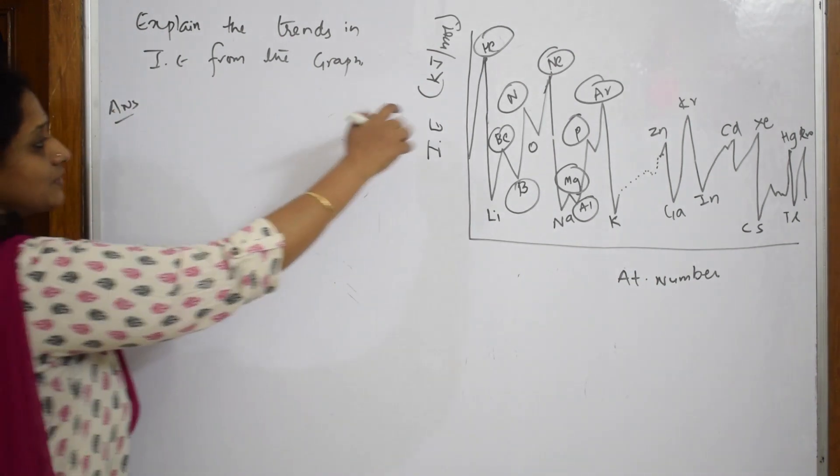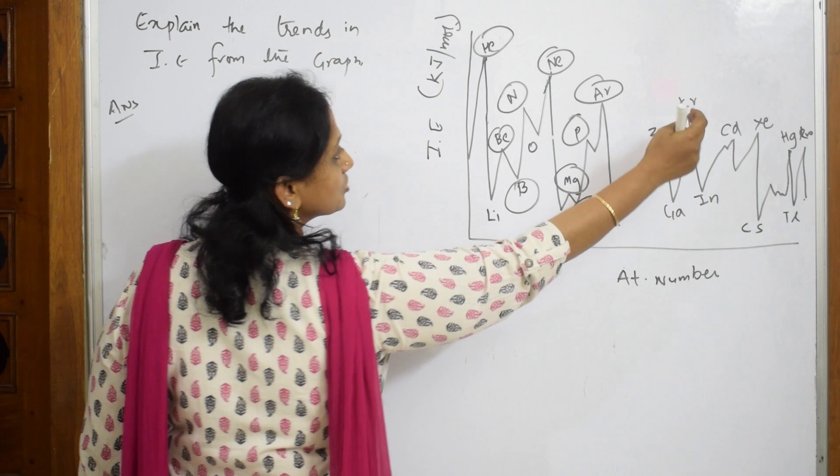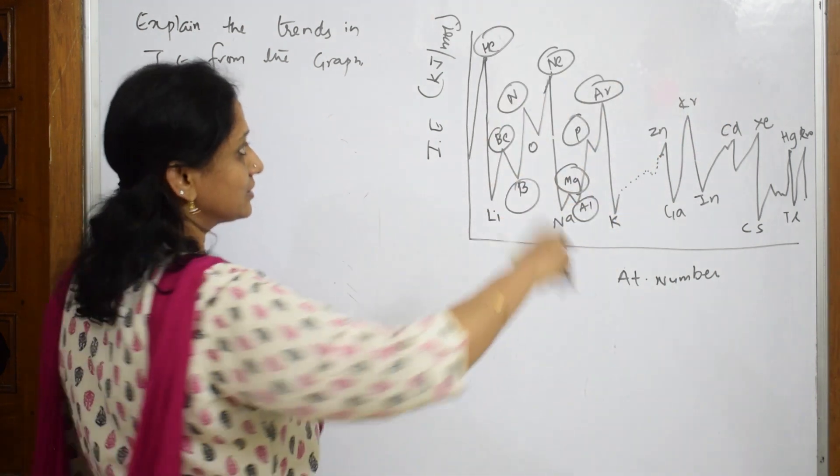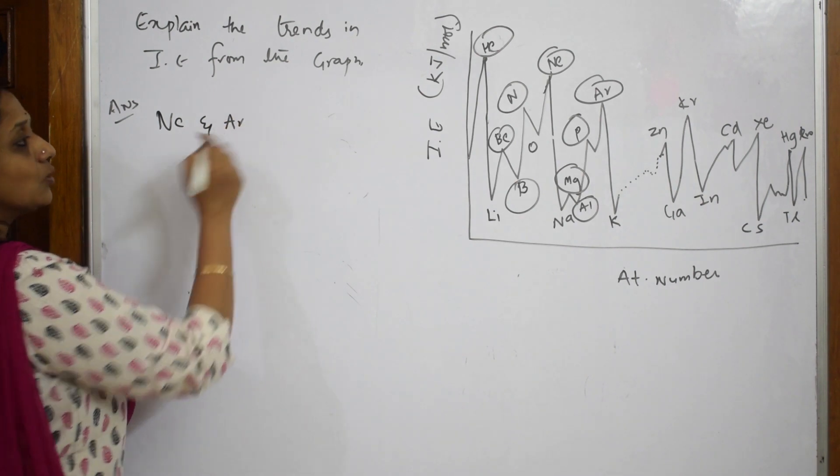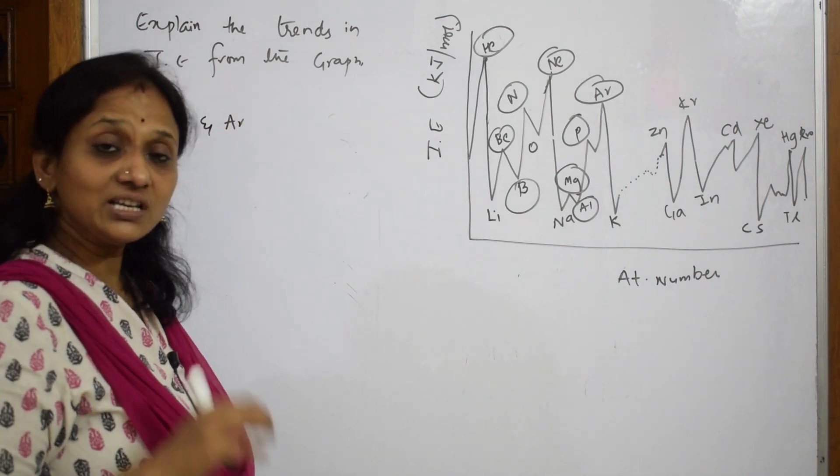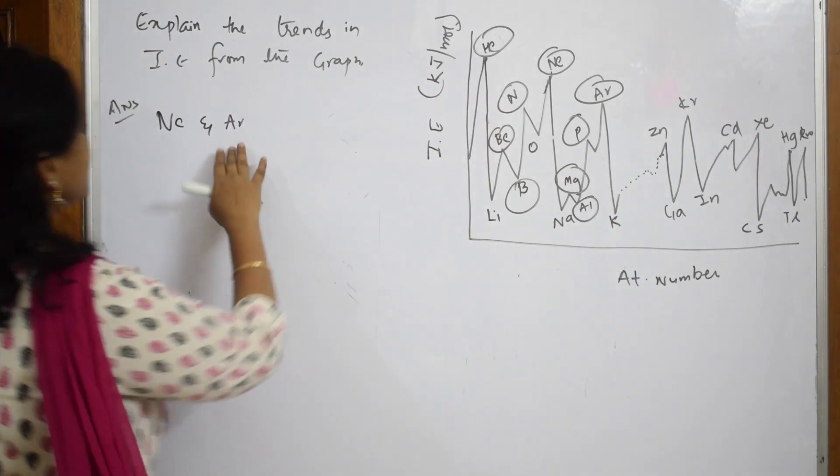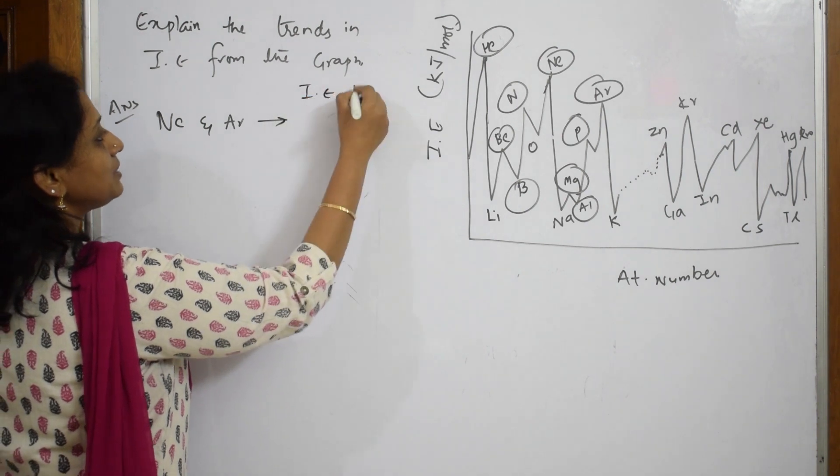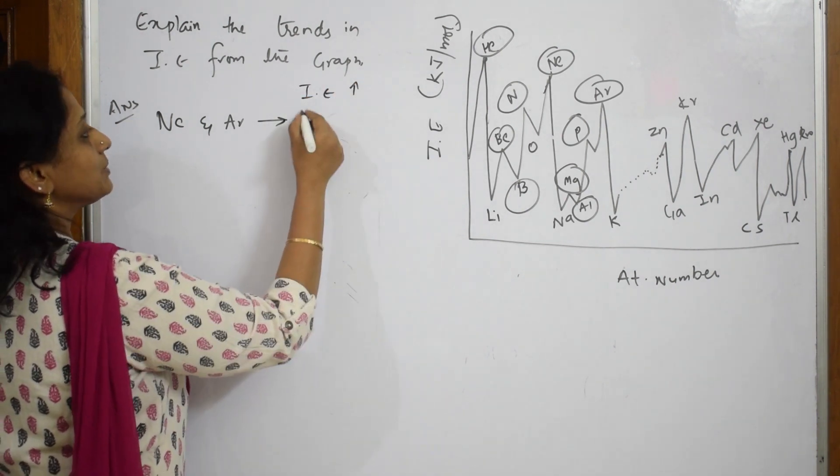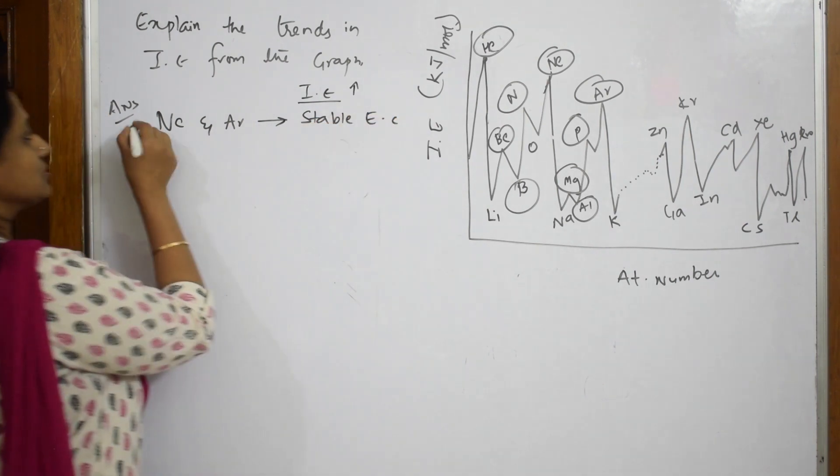First of all, at the peak level this is helium, neon, argon, krypton, xenon - all the inert gases are higher. Let's pick up two. If I take neon and argon, why is the peak highest? Why is the ionization enthalpy maximum high here? This is ionization enthalpy, this is atomic number. Why is it maximum? Because of stable electronic configuration.